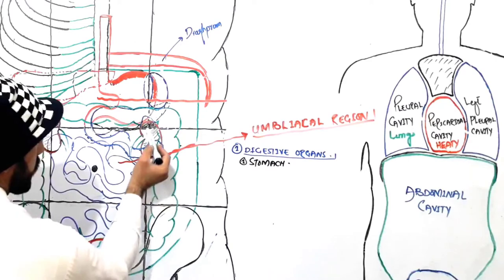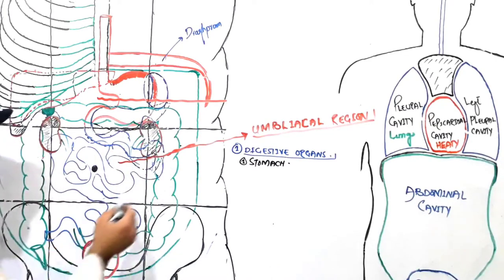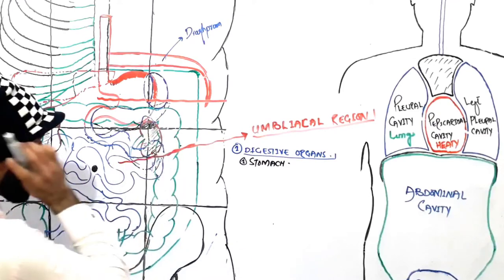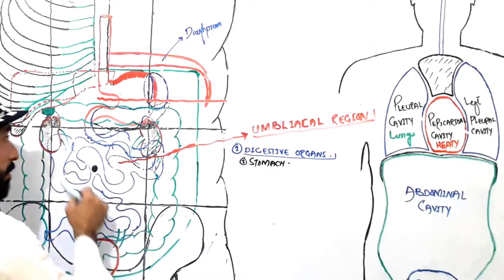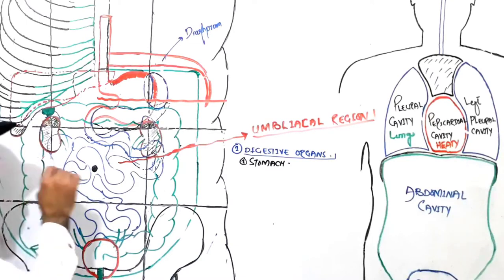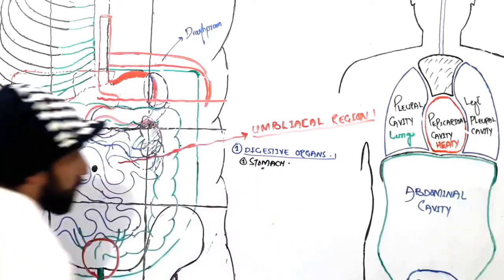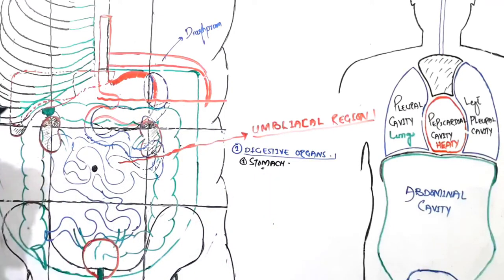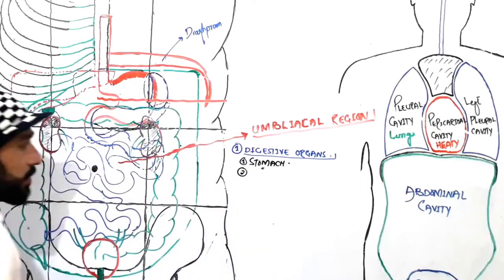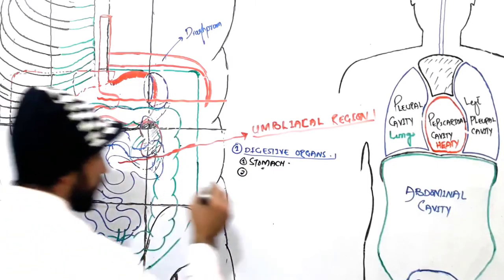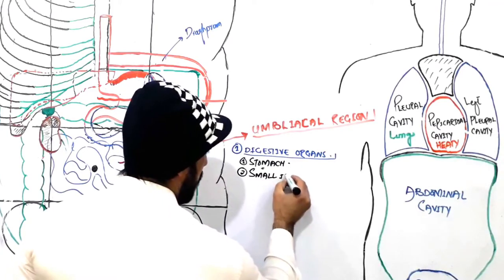For example, some parts of the kidneys are present in the epigastric region and some in the right and left hypochondriac regions. Small parts of these organs are found in every region of our abdomen. So some part of the stomach is found in the umbilical region. The next digestive organ found here is the small intestine.